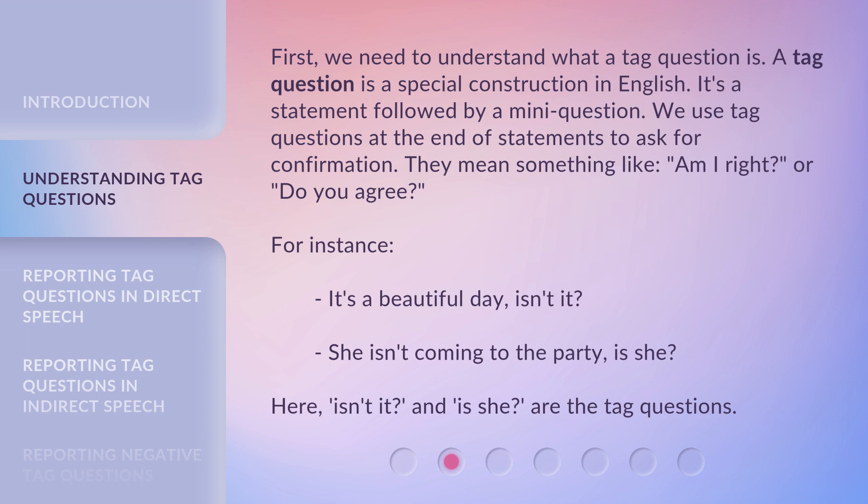For instance: 'It's a beautiful day, isn't it?' and 'She isn't coming to the party, is she?' Here, 'isn't it?' and 'is she?' are the tag questions.